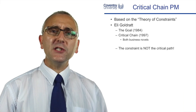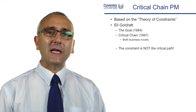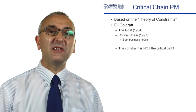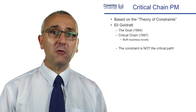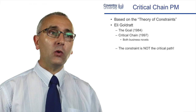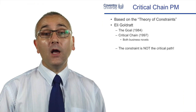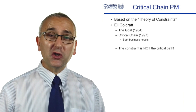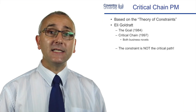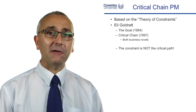Let's look at critical chain project management. Critical chain has been evolved from Eli Goldratt's book The Goal and the Theory of Constraints. There was a book published in novel format, rather like The Goal, called Critical Chain in 1997. Basically what Eli Goldratt is saying is that the constraints to your project isn't the time, it isn't the critical path — it's the resources that you have.